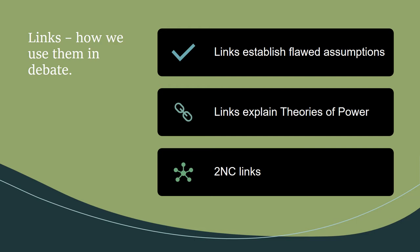How do we use links in debate? The 1AC will make an assumption about, say, water policy and its relationship with the issue of the critique — whether it be settler colonialism, anti-blackness, capitalism, etc. The link may say that water reform policies invest in a capitalist form of control over environmental resources, and this is an assumption that is a flawed way to understand the world. Links help decide the importance of that assumption or advocacy of the 1AC. Critiques say, is it important for us to make that assumption in order to vote affirmative? Is this assumption necessary to the affirmative? Then the affirmative carries with it a set of dangerous assumptions, and we need to analyze them in order to determine its overall effect on the world around us.